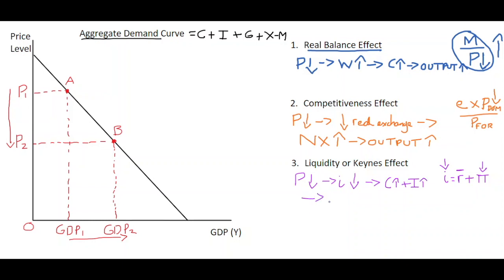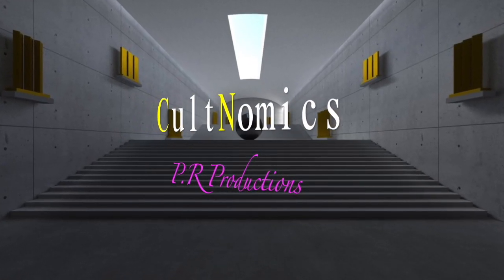That positive impact on spending causes aggregate demand to increase, which causes output — GDP — to increase as well. So we have three effects where the price drops and in each case it has a positive impact on output and spending: through the real balance effect, through the competitiveness effect on exports, and through the liquidity or Keynes effect in terms of consumption and investment. That's the reason why we have a negative slope for aggregate demand. I hope you come back to Cultnomics soon — bye for now.